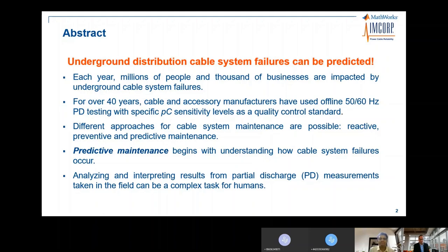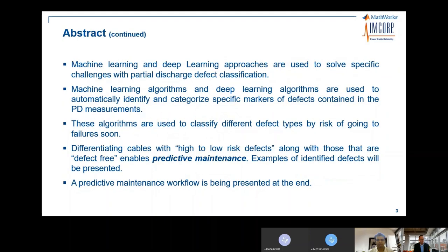Different approaches for cable system maintenance are possible: reactive, preventive, and predictive. Predictive maintenance begins with understanding how cable system failures occur. Machine learning and deep learning approaches are used to automatically identify and categorize specific markers of defects in partial discharge measurements, classifying different defect types by risk of going to failure soon.